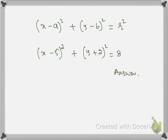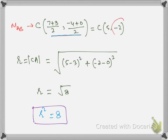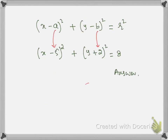Now substitute the coordinates of the center here. Be careful regarding the minus 2 sign — when you substitute, make sure you substitute it correctly, like it should be plus 2, and R squared was 8. So this is the required equation of the circle.